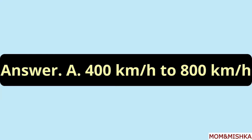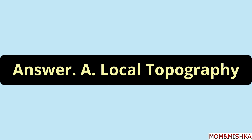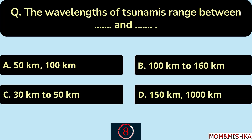The speed of tsunami waves is around 400 km/h to 800 km/h — option A. The height of tsunami waves depends upon local topography — option A. The wavelengths of tsunamis range between blank and blank.